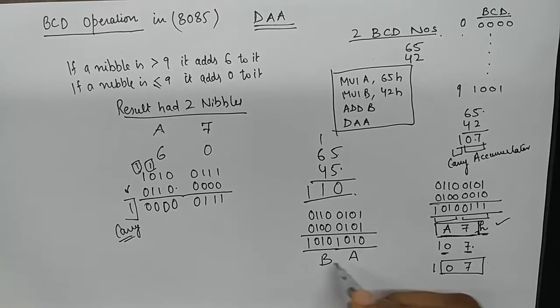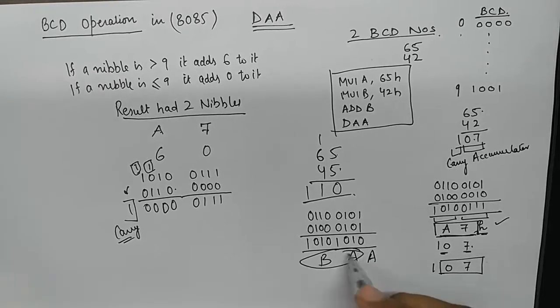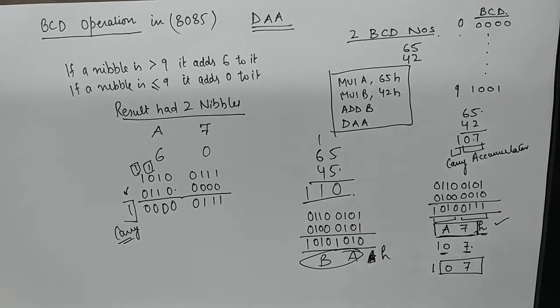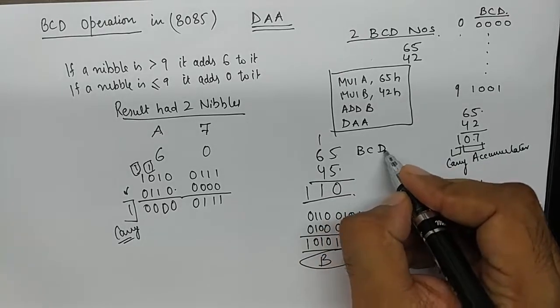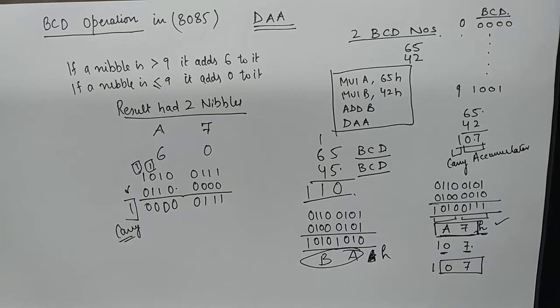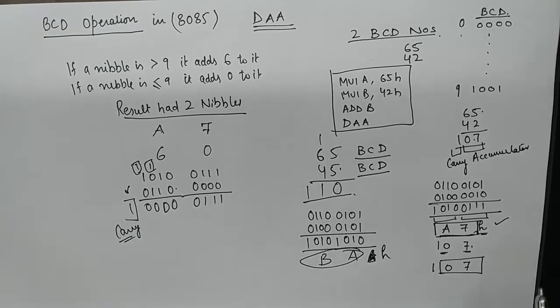So this is A and this is B. A microprocessor would give us the result as BA if we add two BCD numbers 65 and 45. It will give us BA which is utterly incorrect.